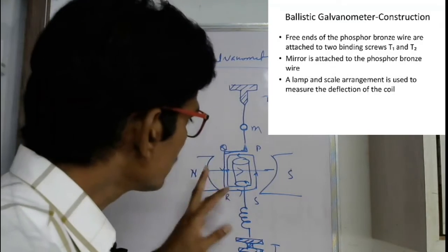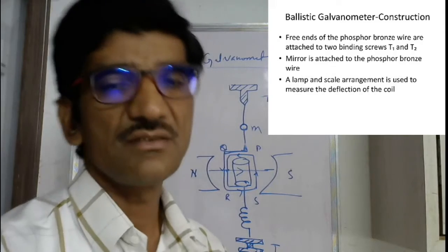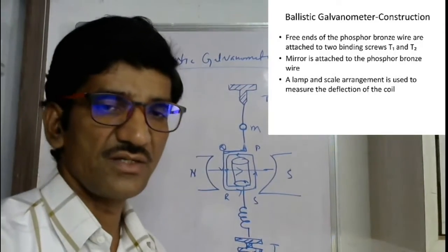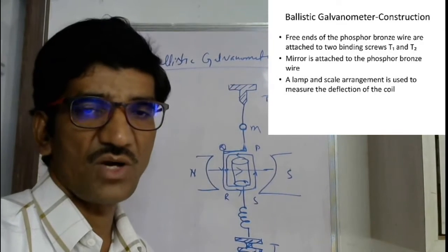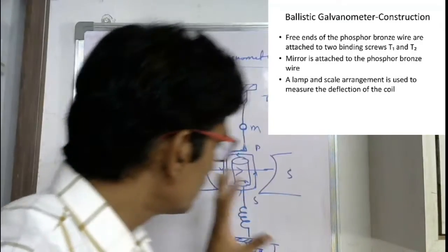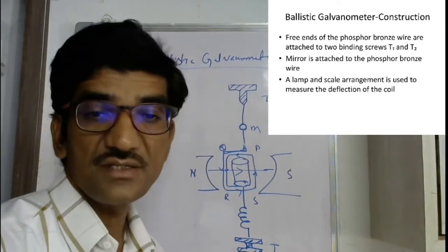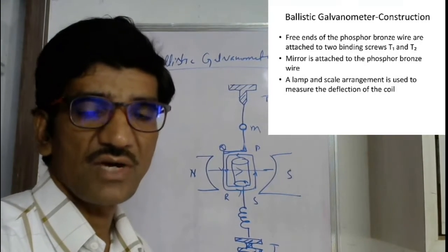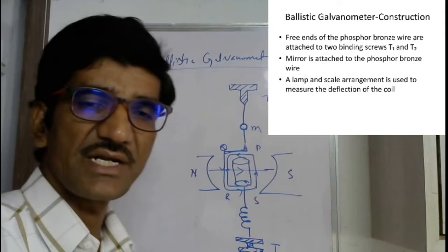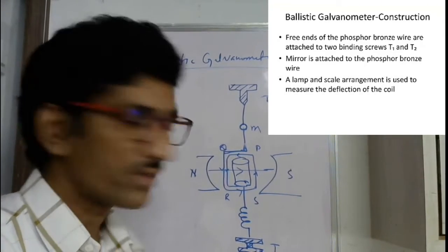The mirror is attached here. Whenever the coil rotates, it makes some twist in the phosphor bronze wire, which causes the mirror to rotate. Whenever you focus some light on this mirror, the beam of light gets deflected due to the twist in the wire. By using the lamp and scale arrangement, you can measure the angular rotation of the rectangular coil. The core of this rectangular coil is non-conducting — ivory, air, or bamboo — to avoid the effect of eddy currents, which would cause damping of the coil.